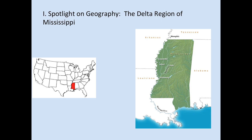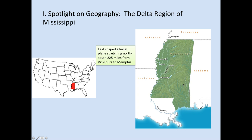Spotlight on Geography to begin here. We're talking about the Delta region of the state of Mississippi and the Mississippi River. You can see on the U.S. map Mississippi's location, and how the river forms a natural boundary between the states of Tennessee, Arkansas, Louisiana, and Mississippi. On the western edge of the state is a leaf-shaped alluvial plain stretching north-south about 225 miles from Memphis to Vicksburg — the region called the Mississippi Delta.